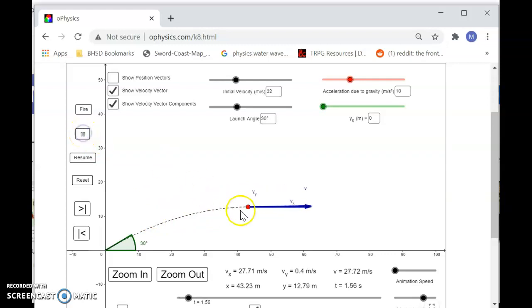Now once it gets to the top, it is no longer climbing. It's no longer going up. At that point, gravity will continue to accelerate it in the downward direction. And that velocity downward will get bigger and bigger and bigger. So that is exactly what I want to show them.